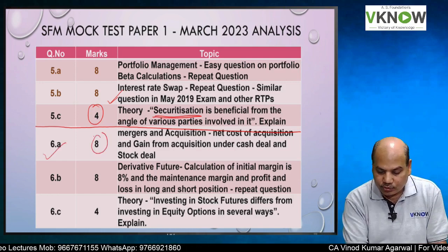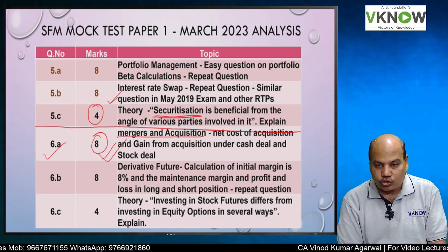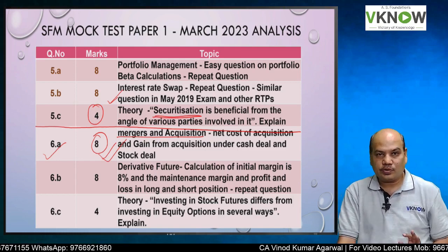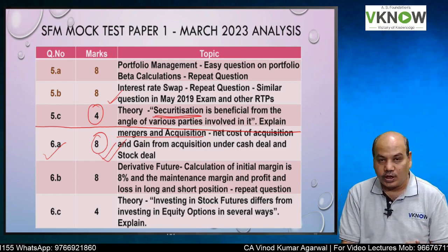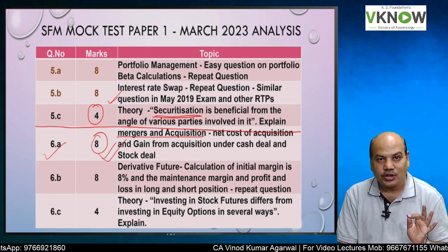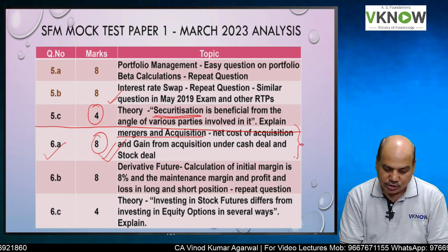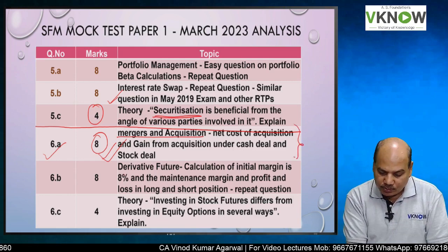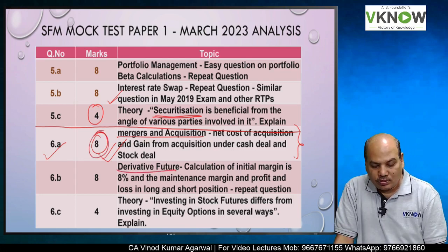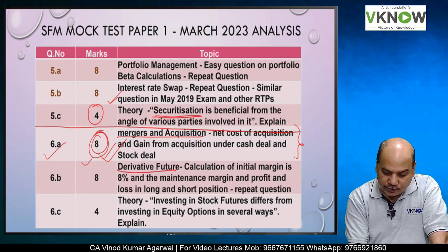Question 6A was for 8 marks on mergers and acquisitions — a very good question where you have to find out the net cost of acquisition plus the gain from acquisition under a cash deal and under a stock deal. If you are appearing in this exam, just check question 6A for 8 marks — it is very important.